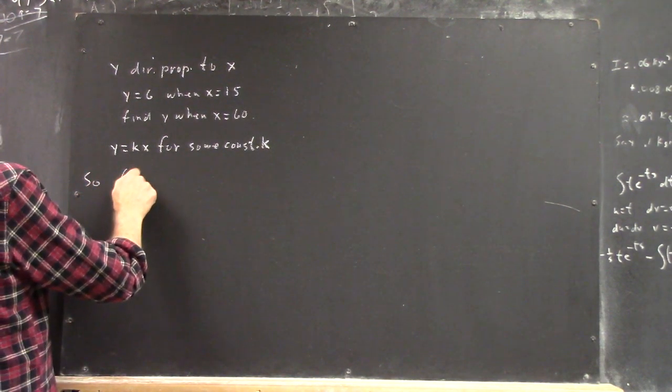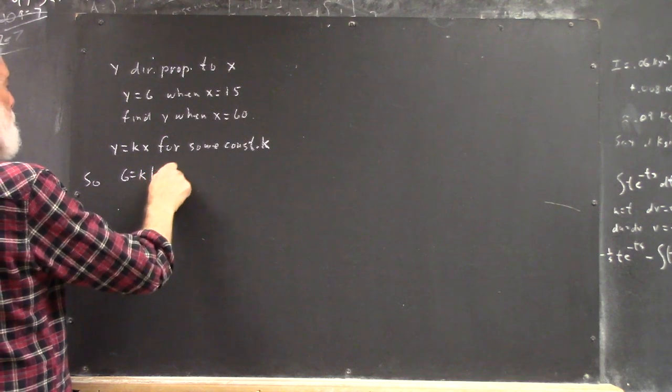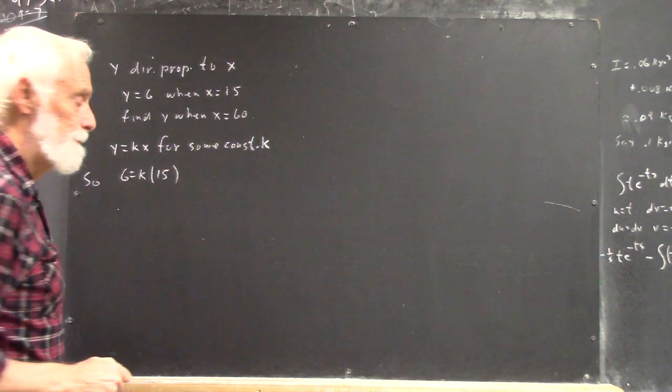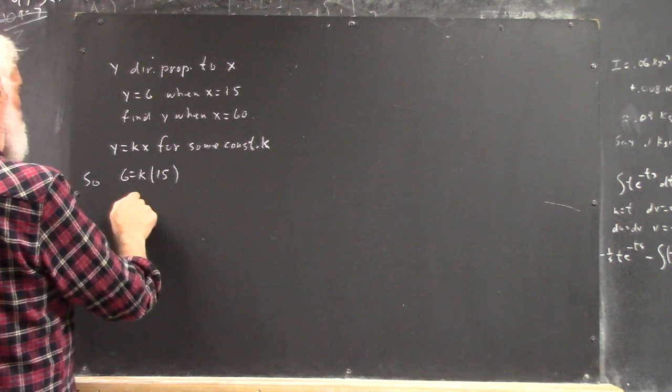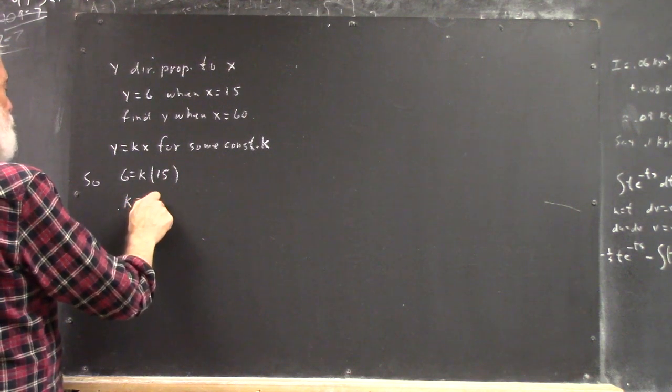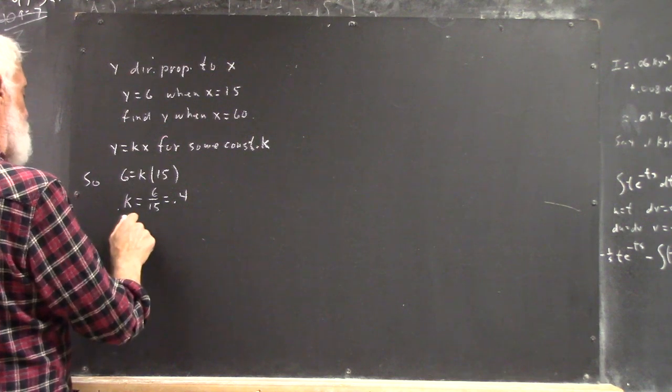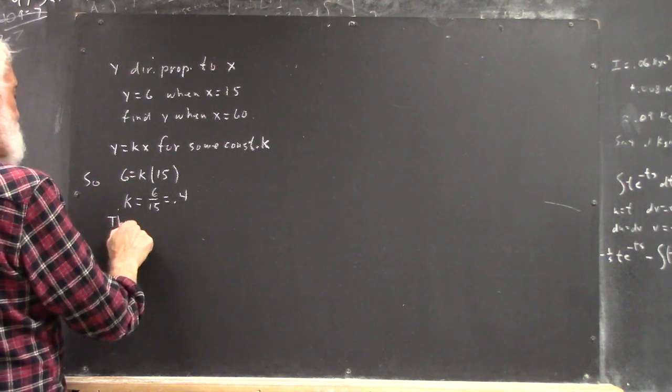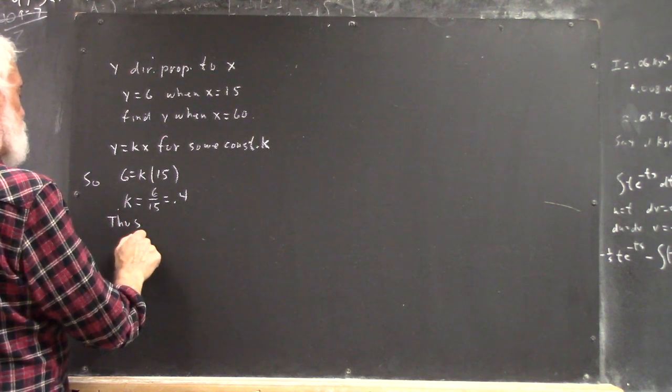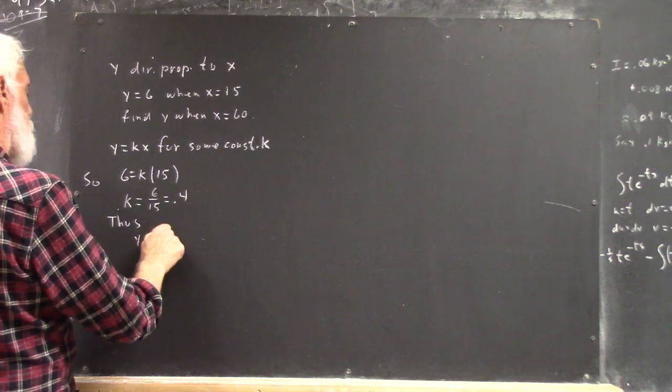So, 6 equals k times 15. K equals 6 over 15, which is 0.4. Thus, y equals 0.4x.